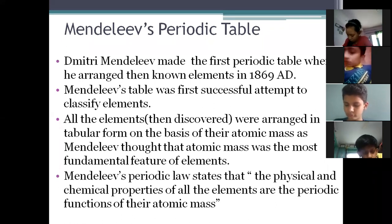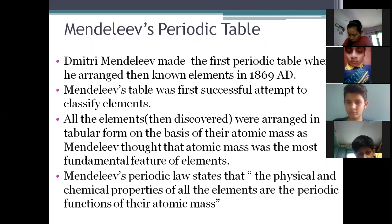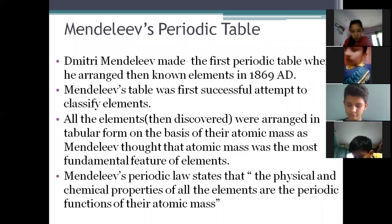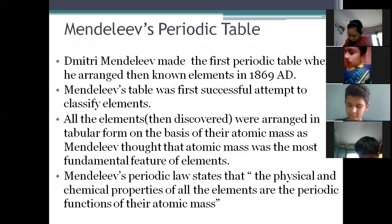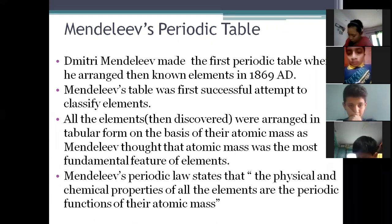For easiness, what you can understand is: the chemical and physical properties of elements depend on their atomic mass — that's the law given by Mendeleev. Mendeleev, while making the table, provided this law. On this law, he tried to arrange all the then-discovered elements on the basis of their atomic mass. The physical and chemical properties of all elements are periodic functions of their atomic mass.